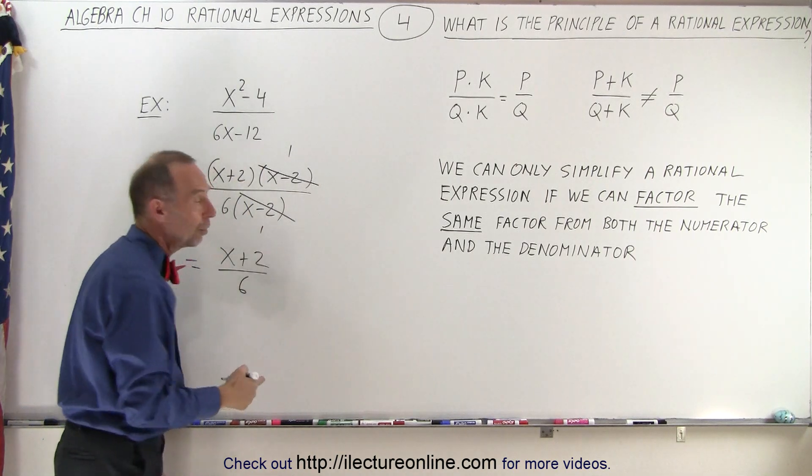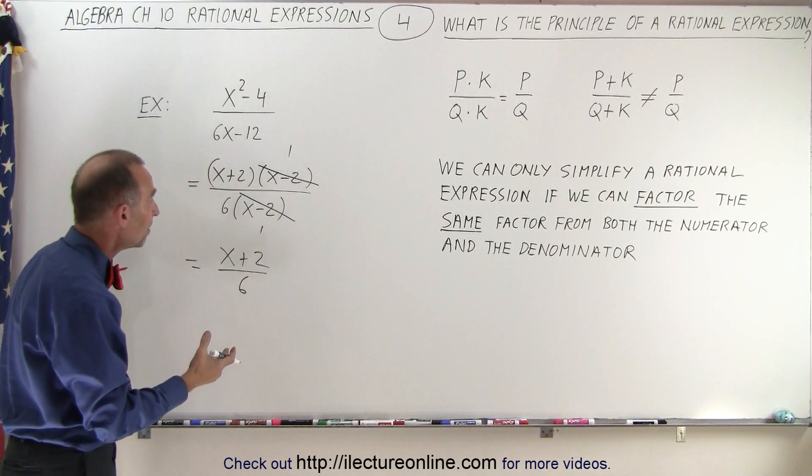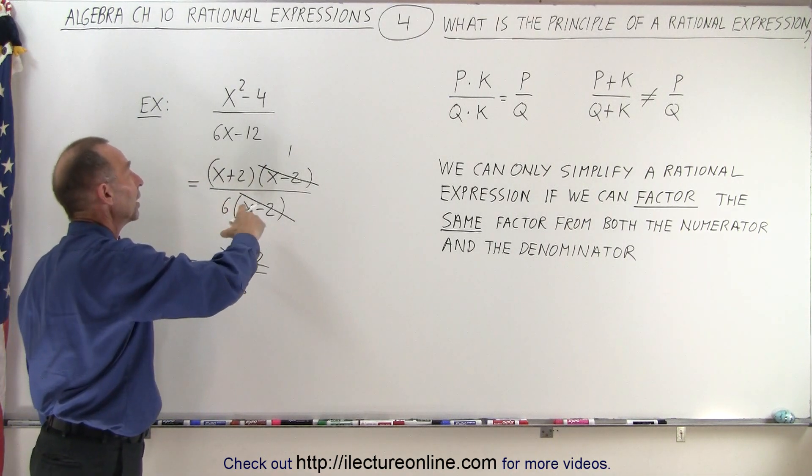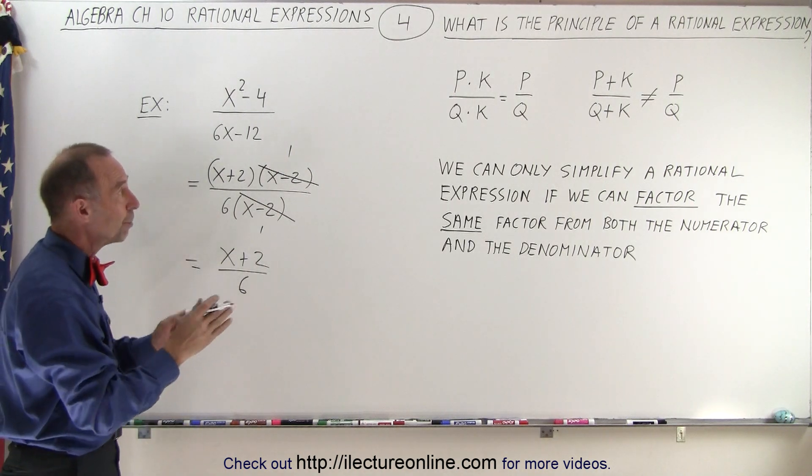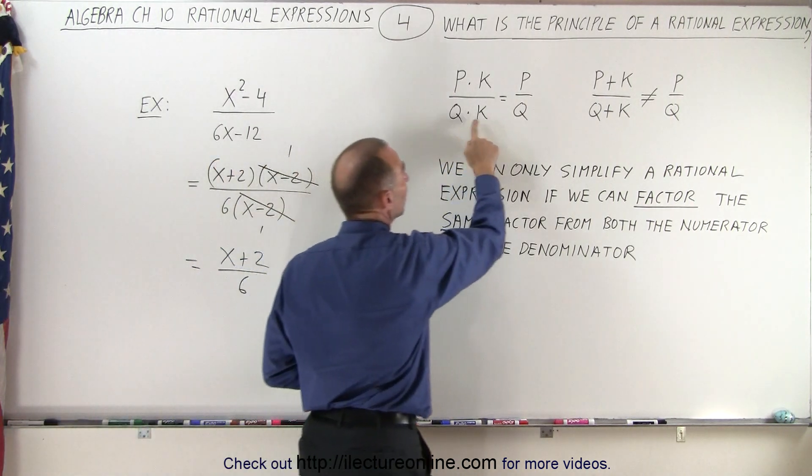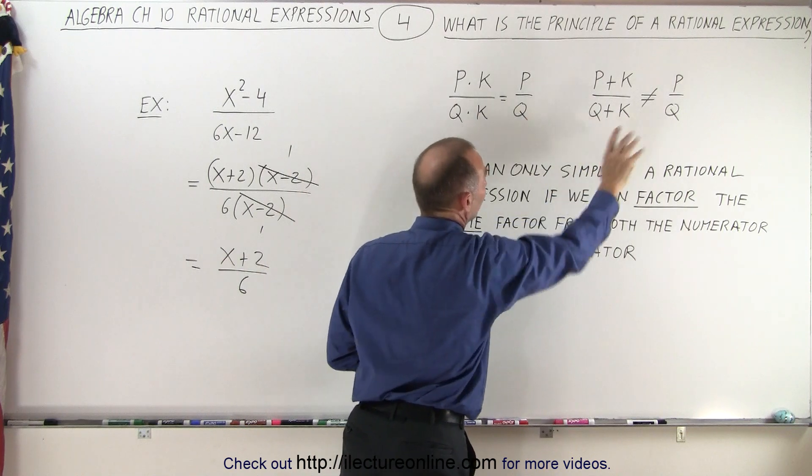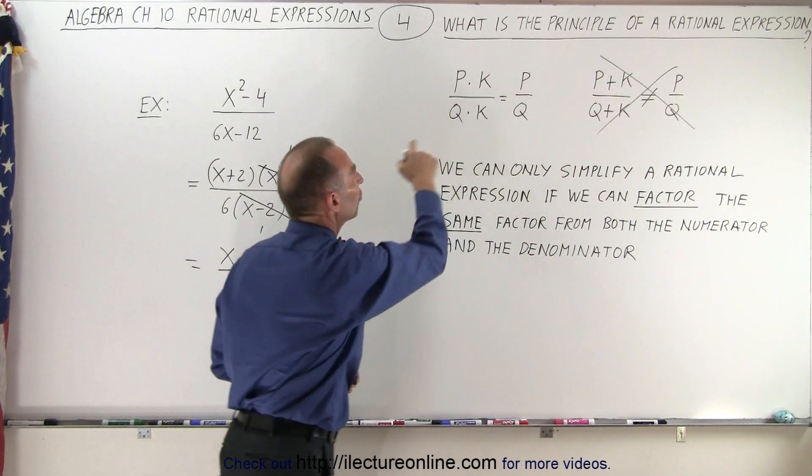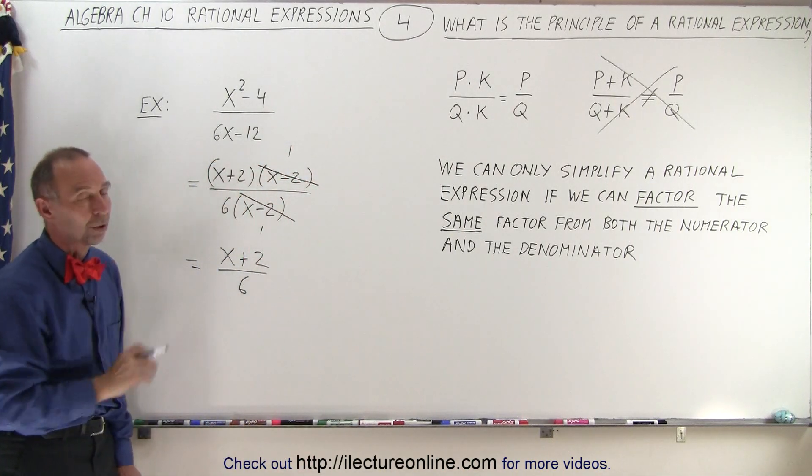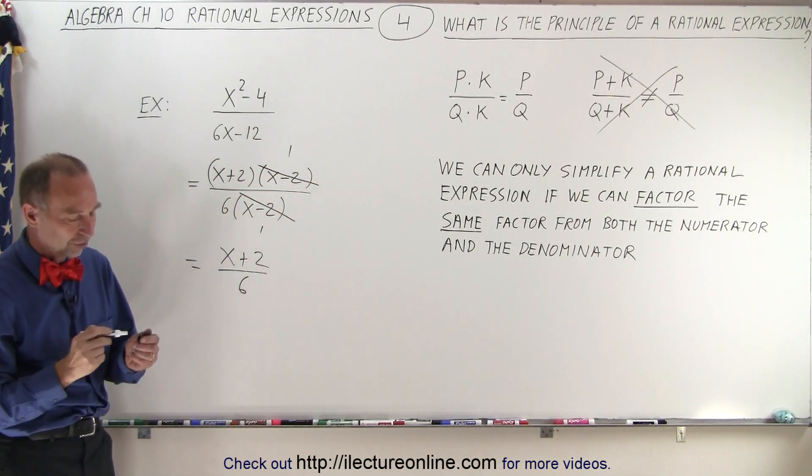This is an example where we can simplify because they have common factors. Common factors means they're multiplied, not added. This we cannot do, this is not permitted. This is permitted, and that's the principle of rational expressions.